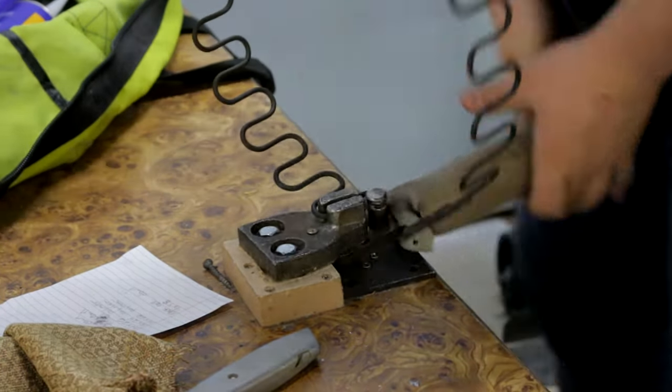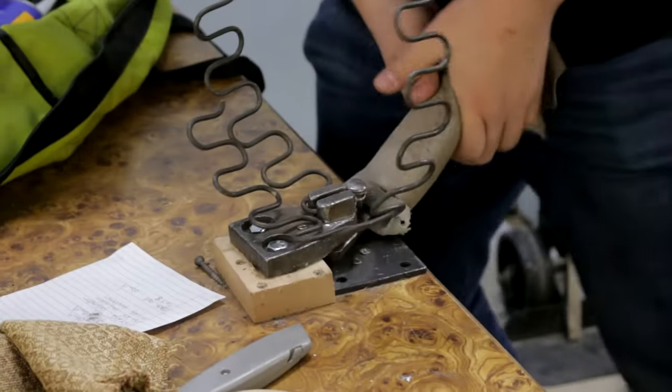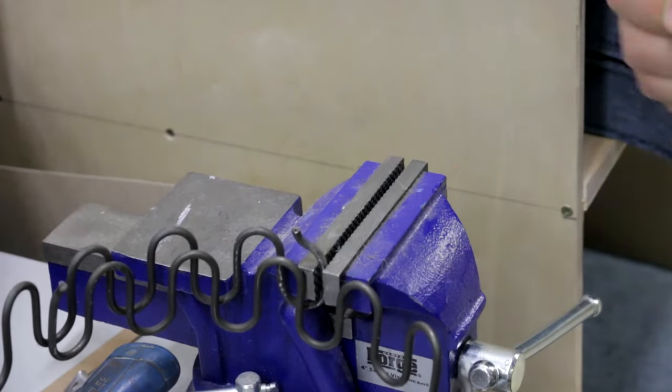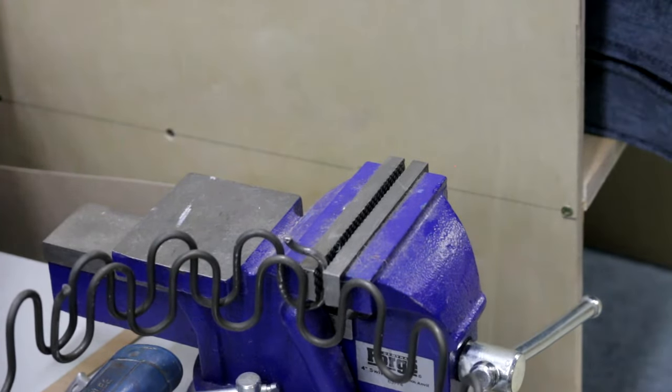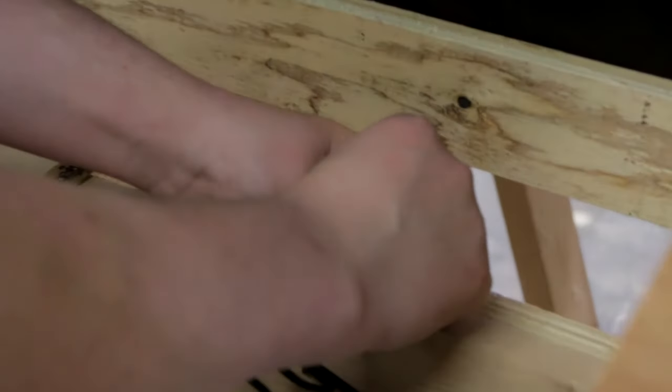Once we have cut the springs, we need to bend the ends to help them stay in the clips. We have this tool that we use at the shop, but you can use a vise and a hammer at home. Now that we have our springs cut and the ends bent in, we can attach them all to the backside of the piece.